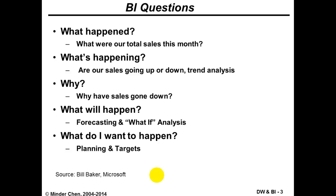Here's a list of questions a leader or manager may ask, sourced from Bill Baker from Microsoft. You may ask what happened in the past — like what were our total sales last month. You may ask more up-to-date information like what is happening — are our sales going up or down — which is a kind of trend analysis. But asking what is not enough; you need to dig further with a follow-up question like why. If you find out that sales are going down, you need to ask why have sales gone down.